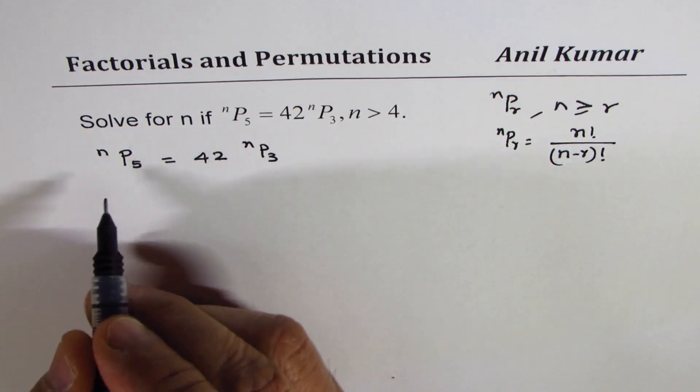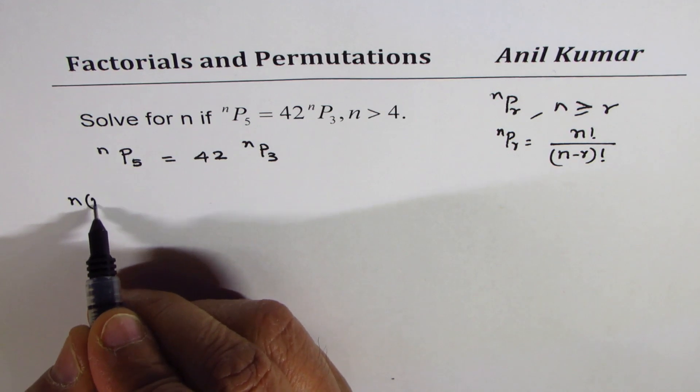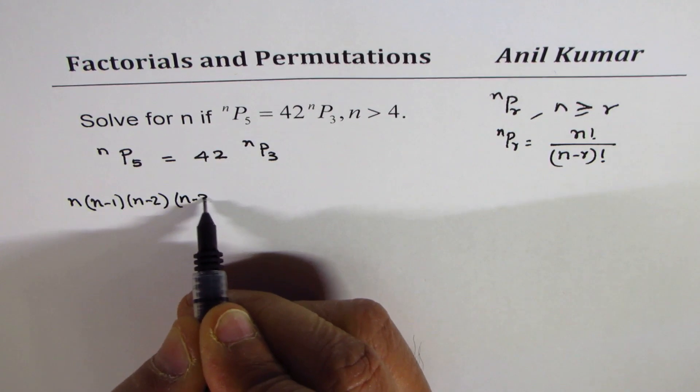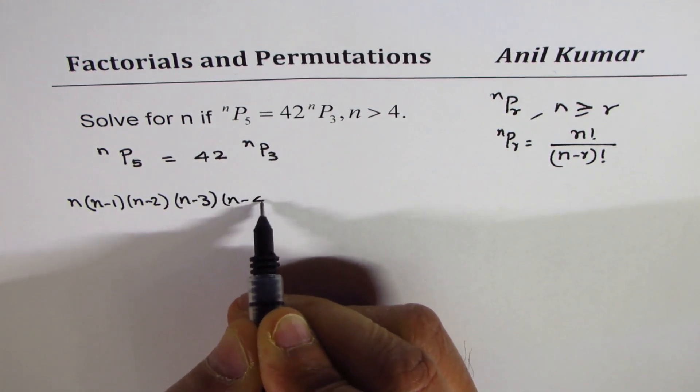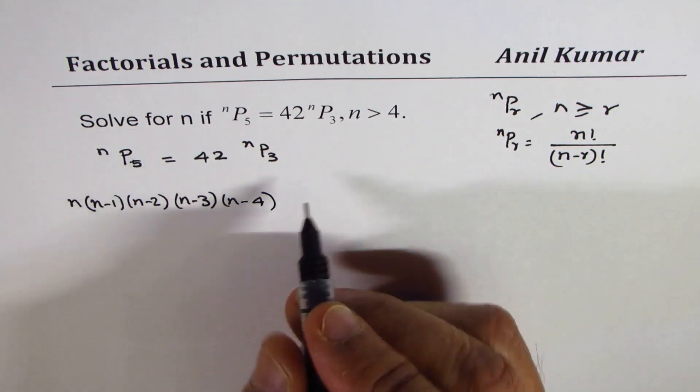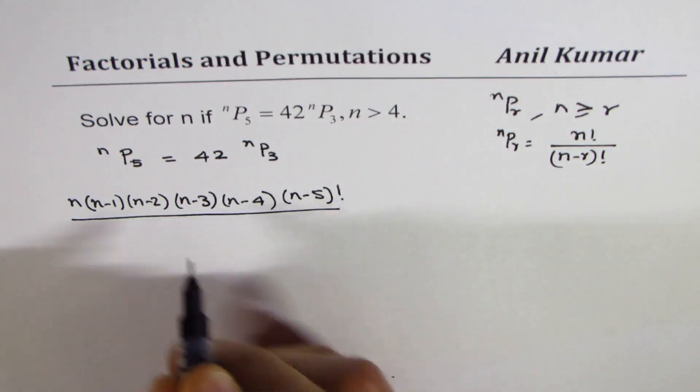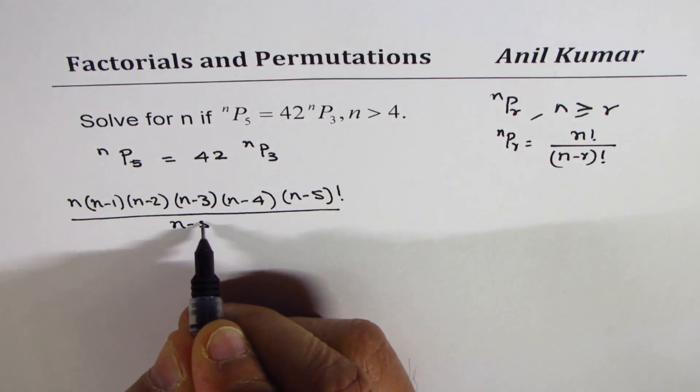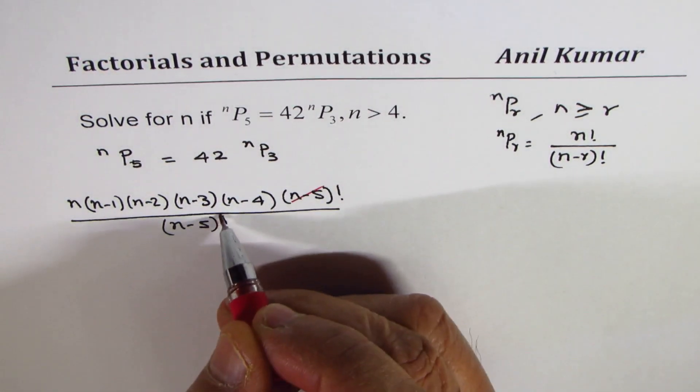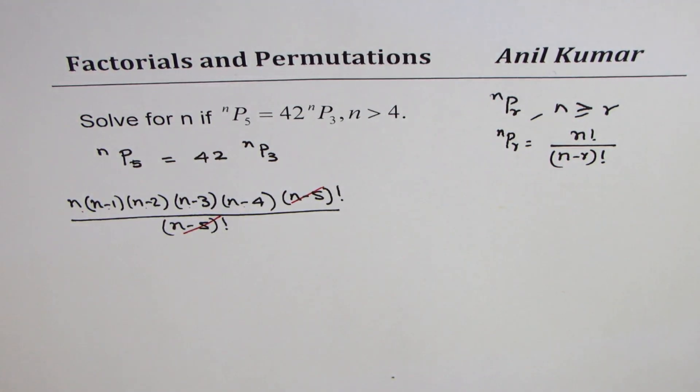So we could write this as n times (n-1) times (n-2) times (n-3) times (n-4) times (n-5) factorial, divided by (n-5) factorial. So it will always cancel out. We are always left with 5 terms: 1, 2, 3, 4, 5. I hope this is absolutely clear.